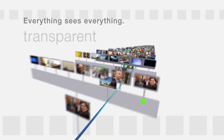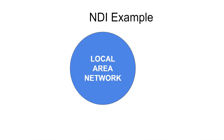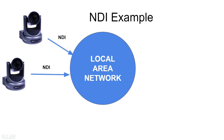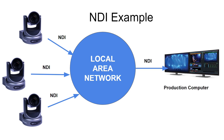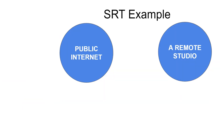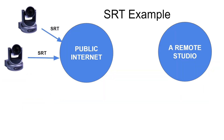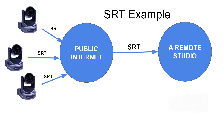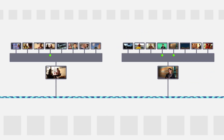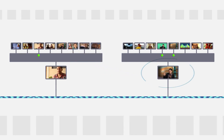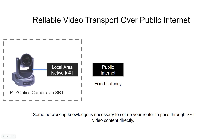NDI is designed primarily for use within a local area network — a network of computers and devices connected together with a router. SRT, on the other hand, is designed to transport video over the public internet. Therefore, NDI is the preferred technology for IP video transmission inside most buildings, where video is transmitted to and from devices on the same local area network. SRT is ideal for sending video long distances, leveraging the connectivity available over the public internet.